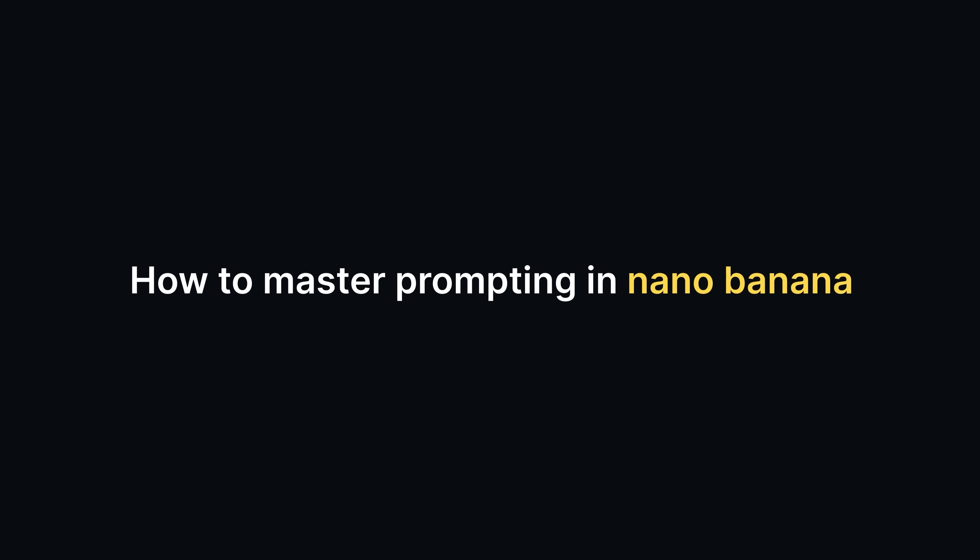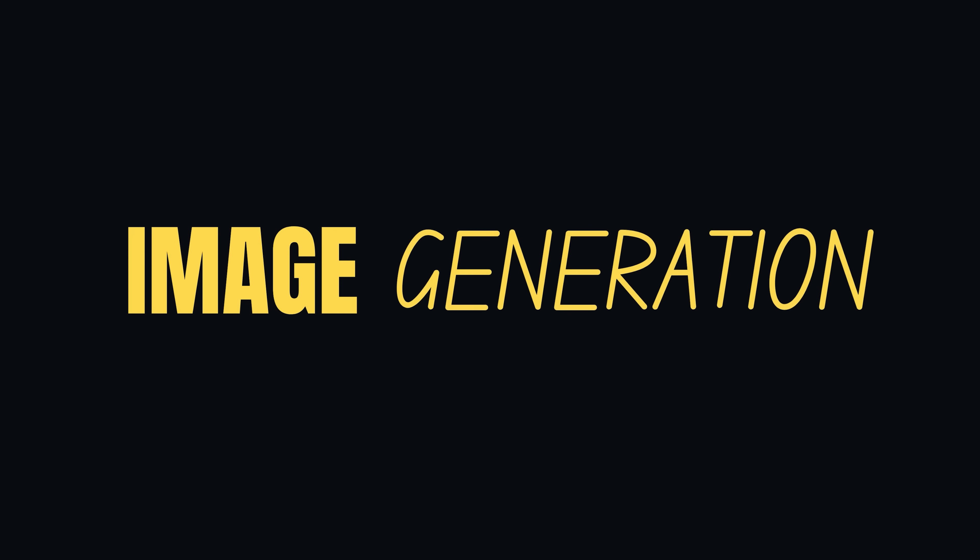So let's move on to how to master prompting inside NanoBanana. There are two main key areas that people focus on when using AI image generators. One is image generation, which is self-explanatory, and number two is going to be editing images. There are lots more things that people use AI for, but these are the main two we're going to focus on today.